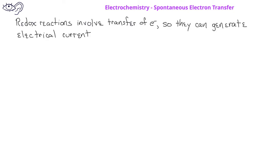Electrical current is the flow of electric charge, such as when electrons flow through a wire or when ions flow through a solution. Redox reactions involve the transfer of electrons from one substance to another, so these types of reactions have the potential to generate electrical current.